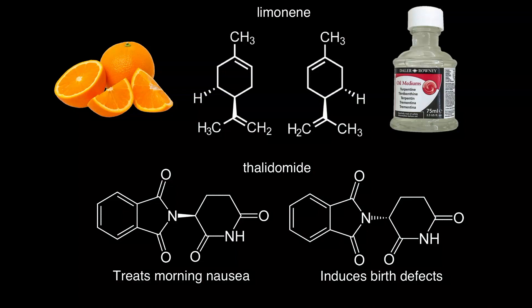Many agrochemicals and pharmaceuticals also have a certain handedness, and this was brought to prominence in the late 1960s when the drug thalidomide was first marketed in Europe to treat morning nausea in pregnant women. It turns out the non-superimposable mirror image of thalidomide actually induced birth defects, and in 50% of all cases, fetal death — a pretty catastrophic example that really brought to the forefront the importance of testing the effects of molecules that seem identical but are non-superimposable mirror images of each other.